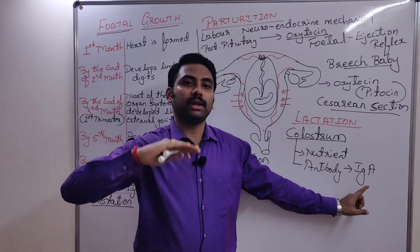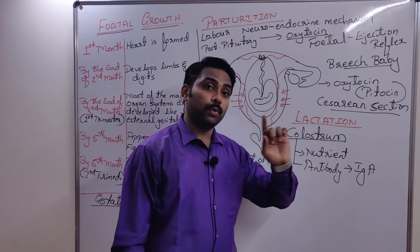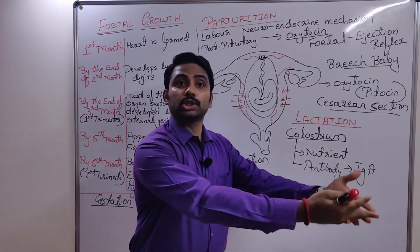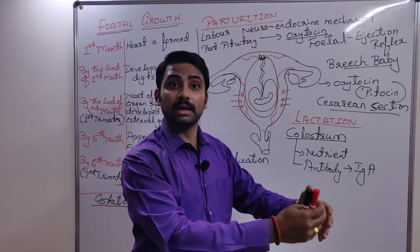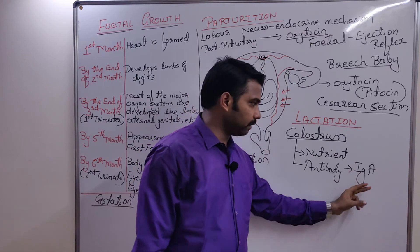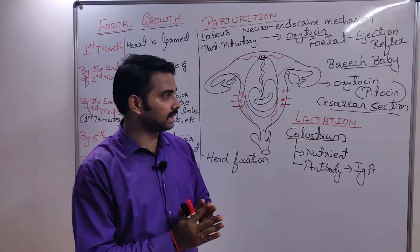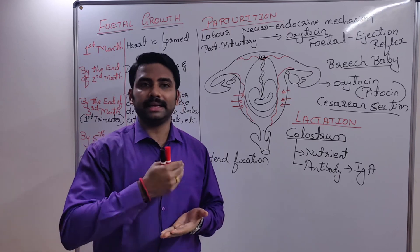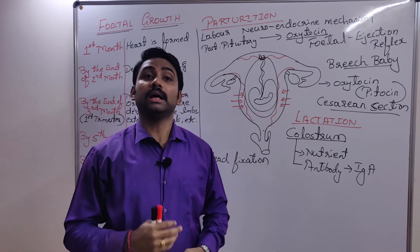Which antibody can cross the placenta? IgG. Which antibody produced by the mother through breast milk goes to the infant and gives immunity? IgA. This is all about the chapter of human reproduction. This knowledge is very important for studying the next chapter on reproductive health.